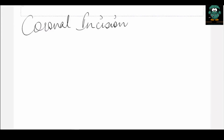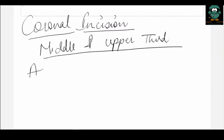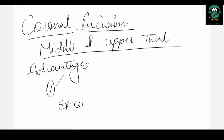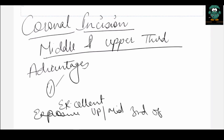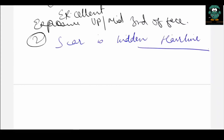Hello and welcome to Surgical Utopia. Today we will discuss the coronal flap. This flap is used for procedures that require exposure of the middle and upper third of the facial skeleton. There are basically two advantages: first, it gives excellent exposure to the middle and upper one-third of the face, and second, the scar is hidden in the hairline.